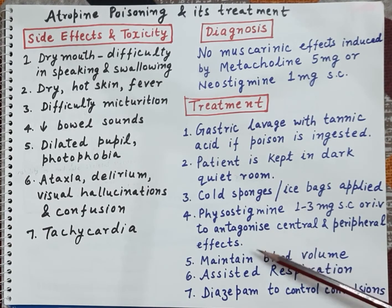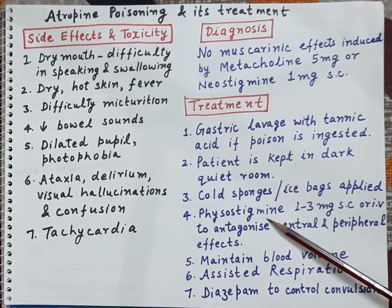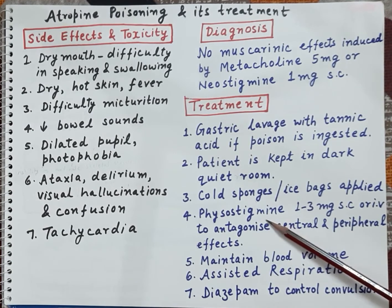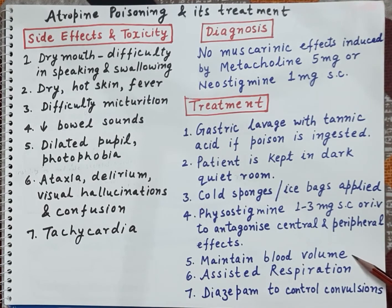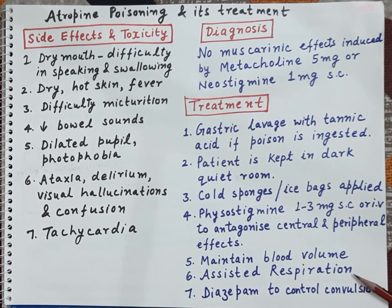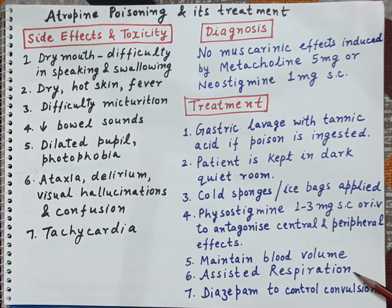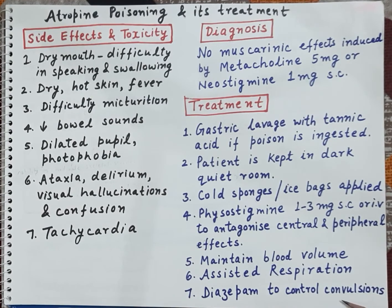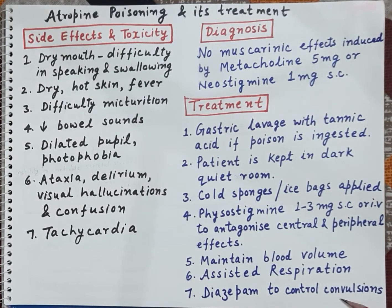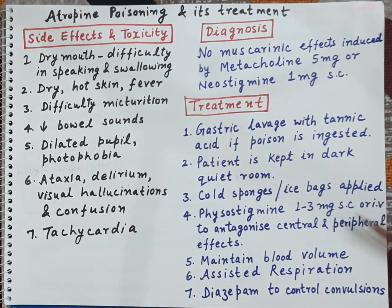It is also essential to maintain the blood volume of the patient. If the patient is not able to breathe properly, assisted respiration should be provided. If convulsions are observed, they should be controlled by the administration of diazepam. This is how the treatment of atropine poisoning should be performed.